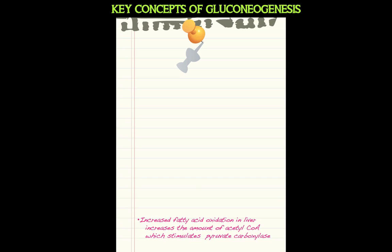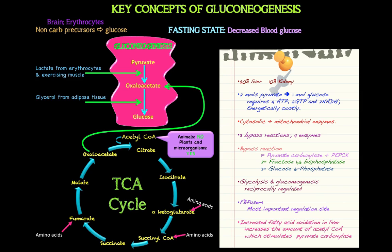Gluconeogenesis is energetically costly, so how do we get the energy? Through increased fatty acid oxidation in the liver. When we break down fatty acids we get acetyl-CoA, and that acetyl-CoA stimulates pyruvate carboxylase. This shows the link between beta-oxidation and gluconeogenesis — both occurring in the fasting state. More details will be covered when we look at integration of metabolism.